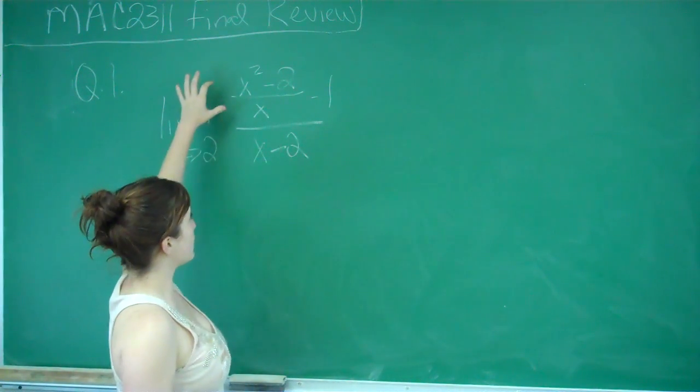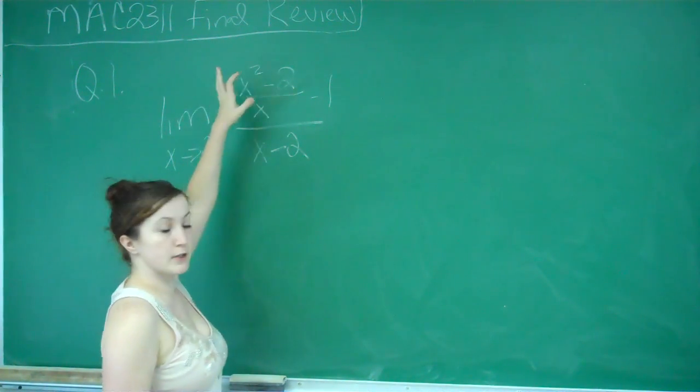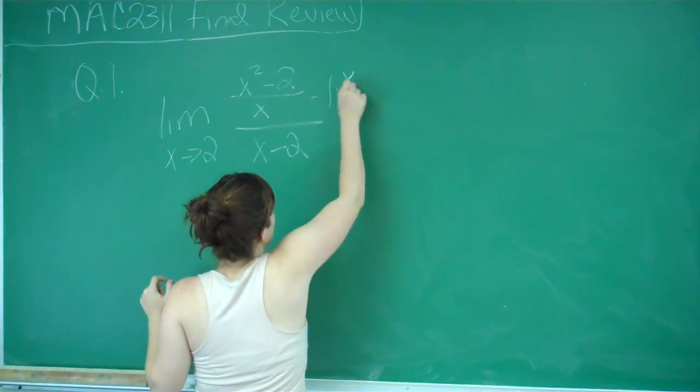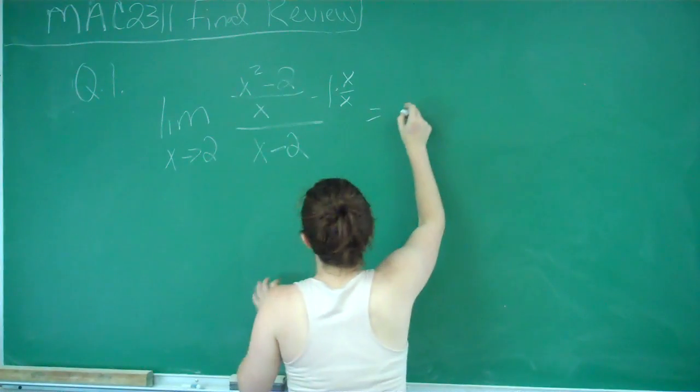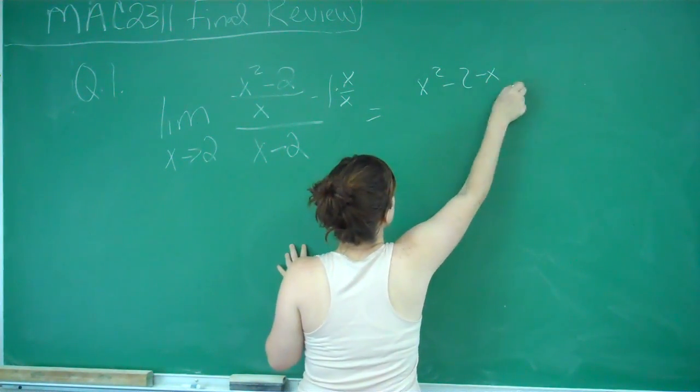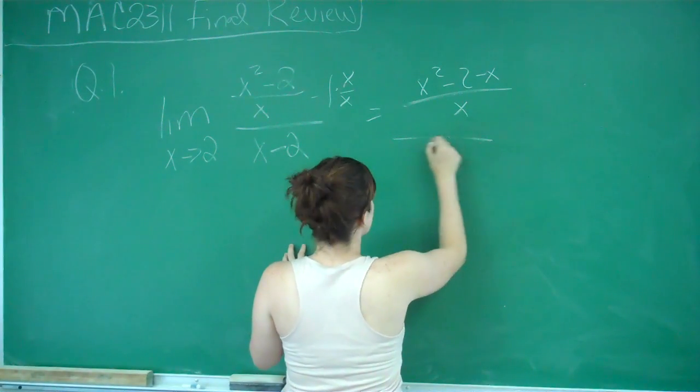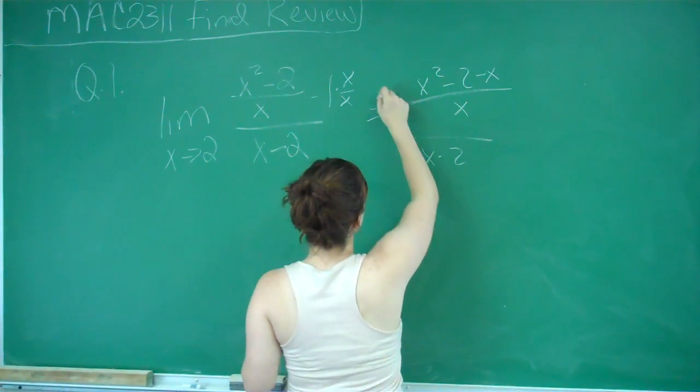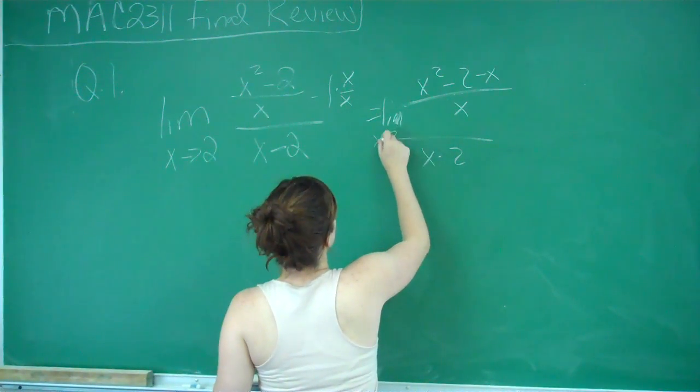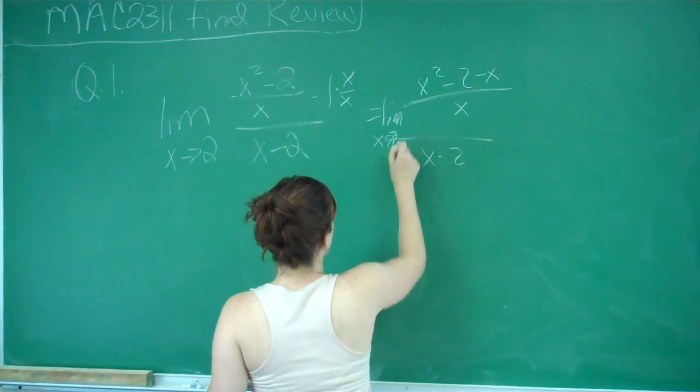So what we need to do is find a common denominator for the numerator, and that's going to be x. So I need to multiply this by x over x, and that'll give me x squared minus 2 minus x all over x over x minus 2. And I'm still taking the limit as x approaches 2.